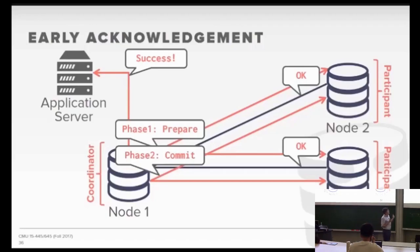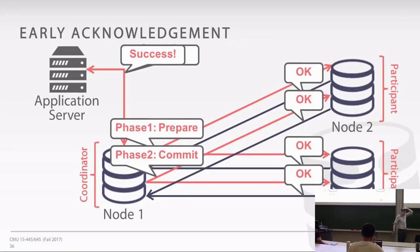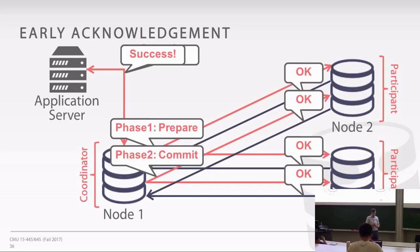In a decentralized model, any node in the cluster could be a coordinator, whereas in the centralized model it's always that single software component doing this. One transaction could go to node one and try to commit there — node one is the coordinator. Another transaction at the same time could go to node two, making another round of two-phase commit where that node is the coordinator and the first is just a participant. So any node can be coordinator in a decentralized model.